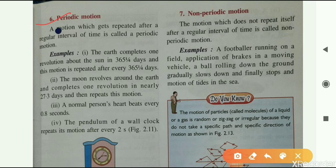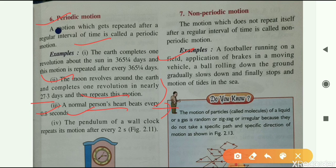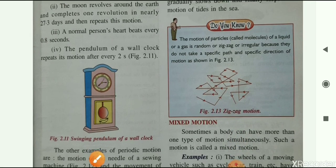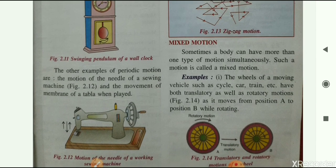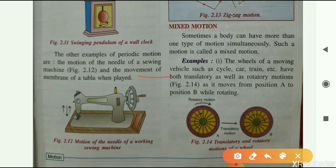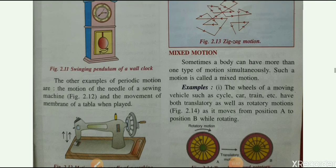Periodic motion is a motion that repeats after a regular interval of time. Examples include the revolution of the earth about the sun, the moon completing one revolution around the earth in nearly 27.3 days, a normal person's heartbeat occurring every 0.8 seconds, and the pendulum of a wall clock repeating its motion every two seconds. The motion of the needle of a sewing machine and the membrane of a tabla when played are also examples of periodic motion.